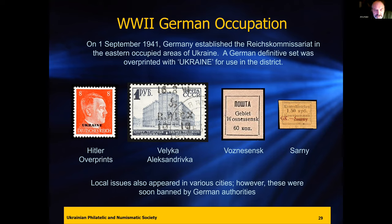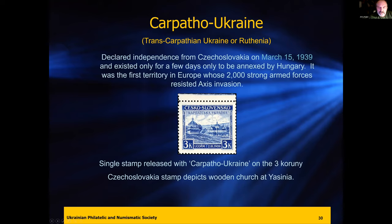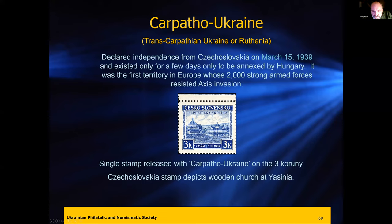Carpathian Ukraine is in the southwest corner. Czechoslovakia held that area until the war. The Ukrainians there rose and formed a government which only lasted a day — they took the Czechoslovak stamp depicting the traditional Ukrainian wooden churches found in the Carpathian regions and issued it overprinted 'Carpathian Ukraine.' This was the only stamp issued. Here it is on a first day cover for the opening of the parliament on March 15, 1939.